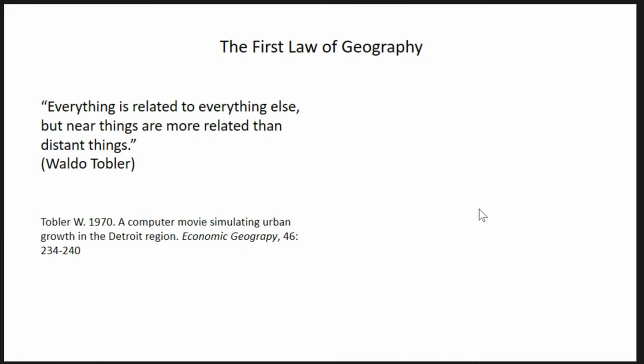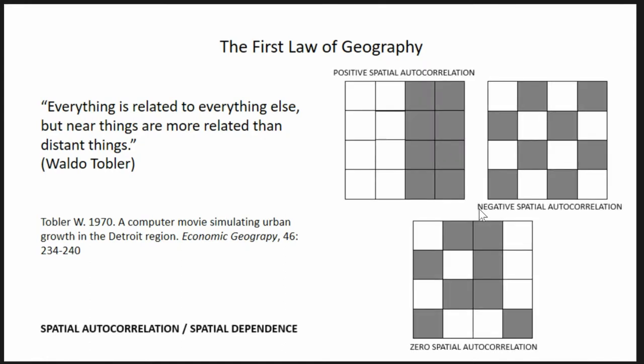I mentioned this sentence, the first law of geography, formulated by Waldo Tobler who passed away a few weeks ago. This presentation is dedicated to him in a way. Spatial autocorrelation or spatial dependency says that everything is related to everything else, but near things are more related than distant things. These are generic examples: you can have positive spatial autocorrelation, negative spatial autocorrelation which is an unexpected correlation between elements with different values, and zero spatial autocorrelation.